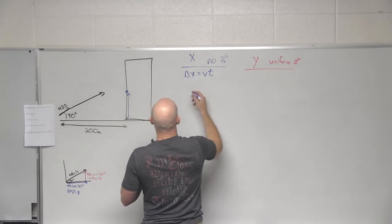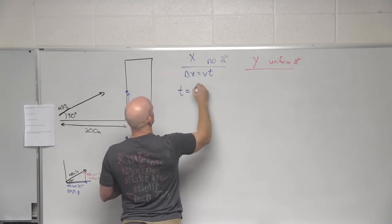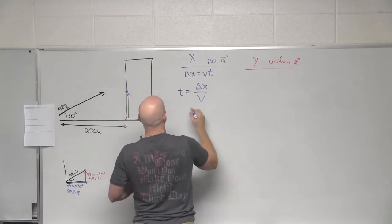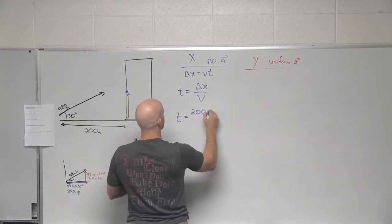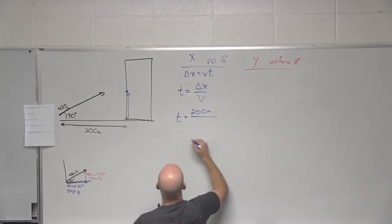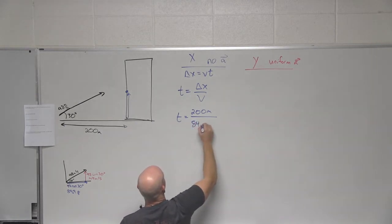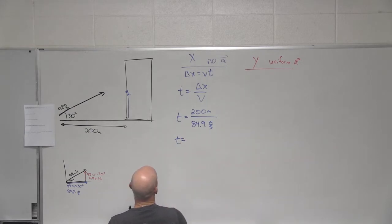Great. So in this case, if we want to find time, it's delta x over v all in the x direction. In this case, our horizontal displacement is 200 meters, and our horizontal velocity was 84.9 meters per second. How long does it take before we hit that building? Good. 2.36 seconds.